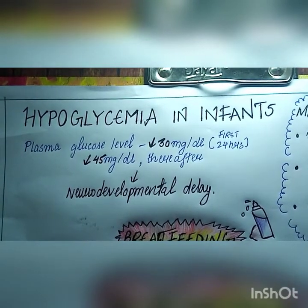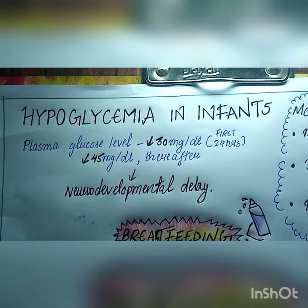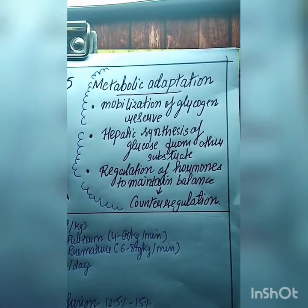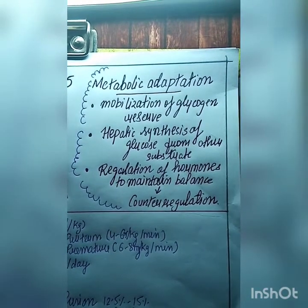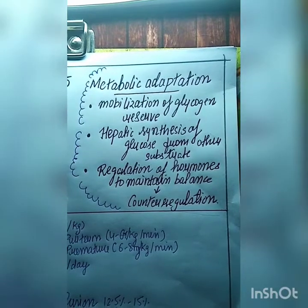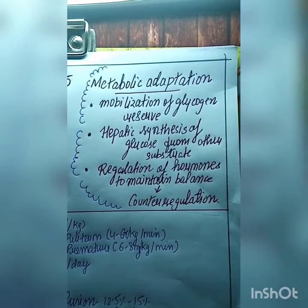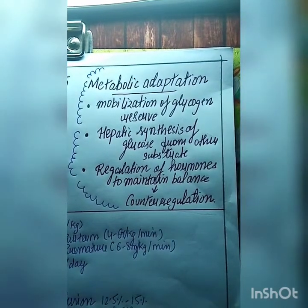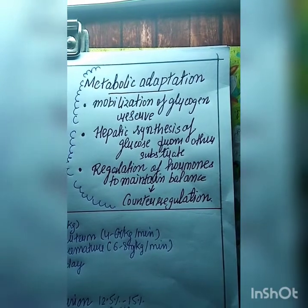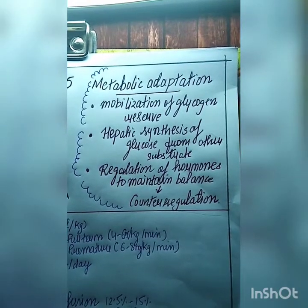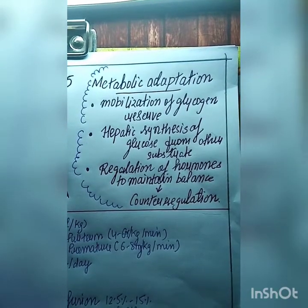If the glucose level is low in the body, it will affect the cells of the brain — the nerves — and also the other cells of the body. When the child transitions from intrauterine life to extrauterine life, there are many changes: change in heart rate, respiratory rate, circulation, hormonal regulation, and metabolic adaptations like mobilization of glycogen reserves, hepatic synthesis of glucose from other substrates, and hormonal regulation to maintain balance. This is the counter-regulation of the body to help the child adapt to extrauterine life.